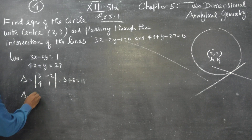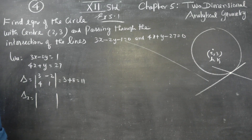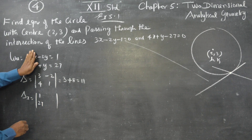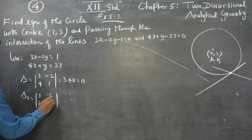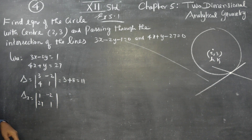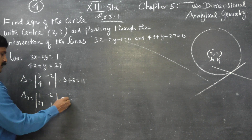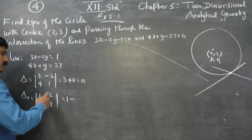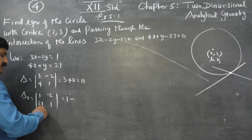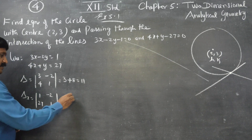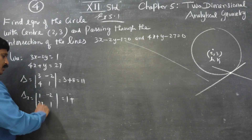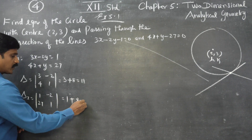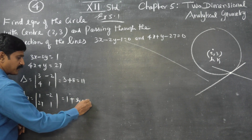Now for delta x: we replace the x-coefficients with the right-hand side values, giving the matrix with 1 and 27. Delta x equals 1 times 1 minus (minus 2 times 27): that is 1 plus 54, so delta x equals 55.